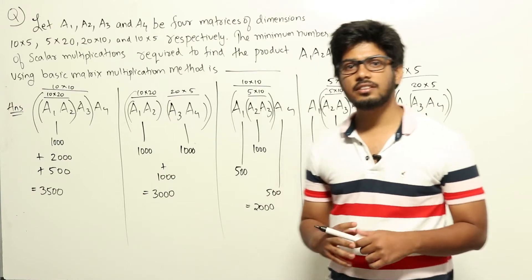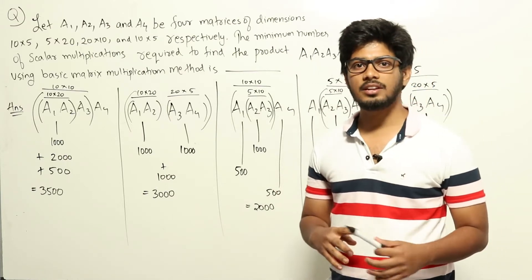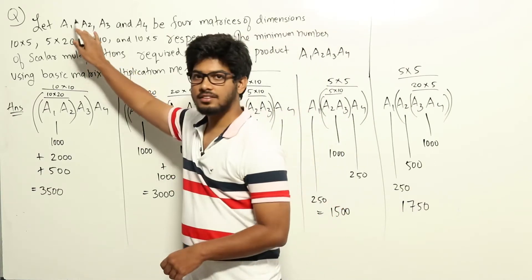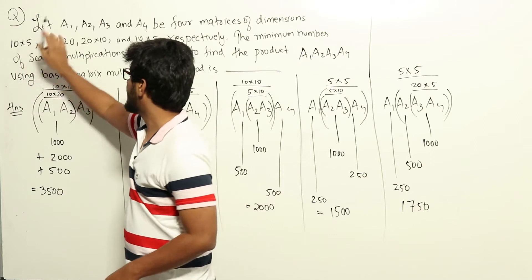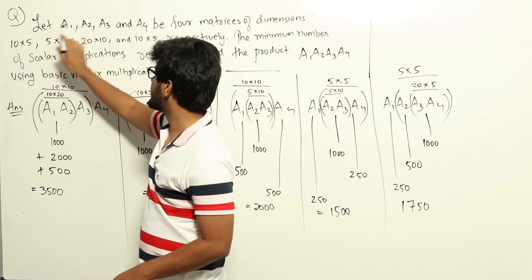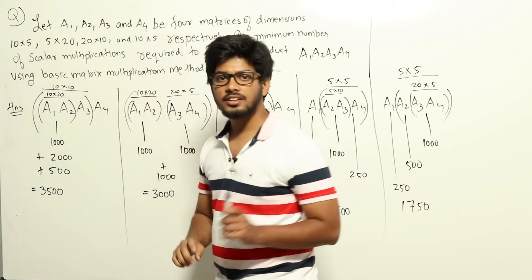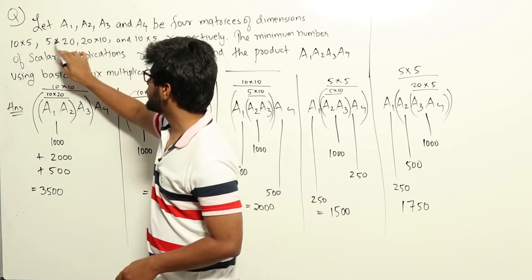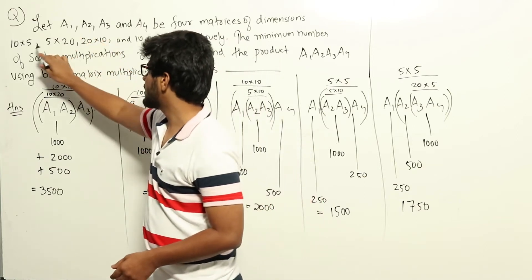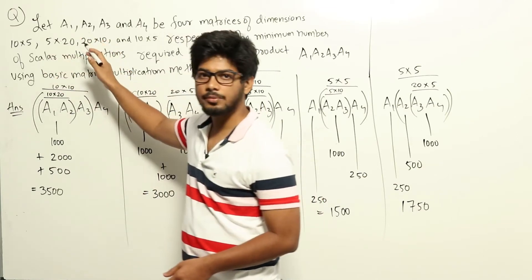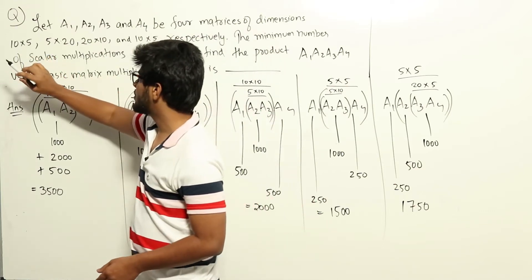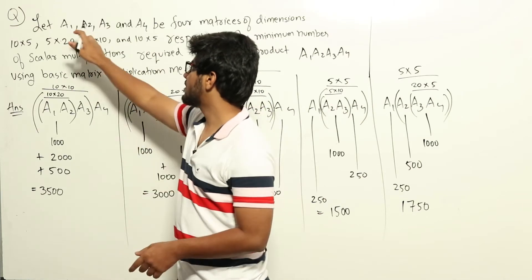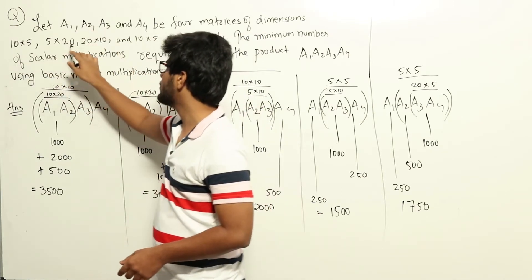This is a question from the algorithm section regarding matrix chain multiplication. If you have two matrices A1 and A2 of dimensions 10×5 and 5×20, the number of scalar multiplications required will be 10×5×20, which is 1000. The final matrix A1·A2 will have a dimension of 10×20.